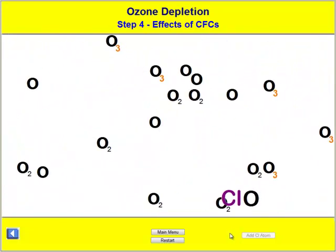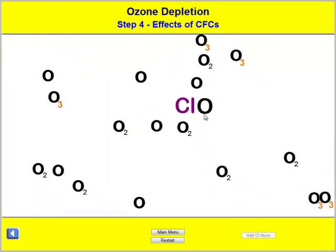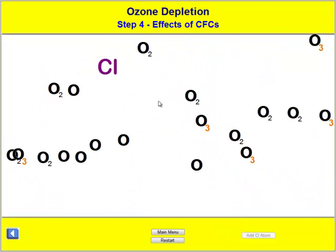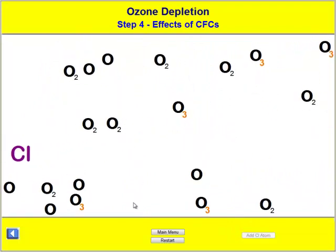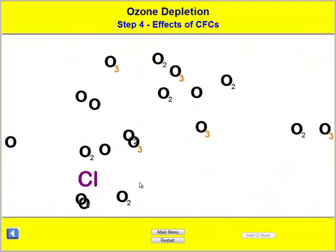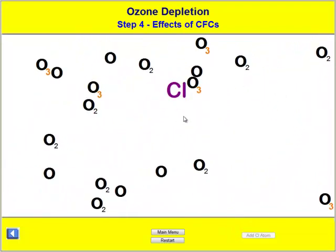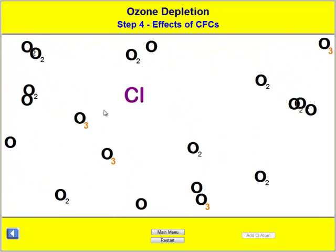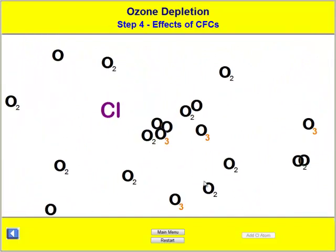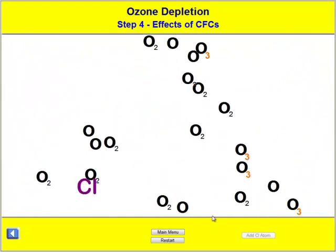Adding a chlorine atom — you can see it breaks up the ozone. And not only does it break it up, but it breaks it up sequentially. It keeps doing it.